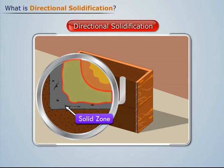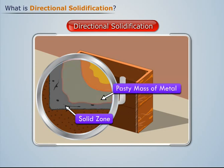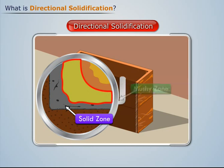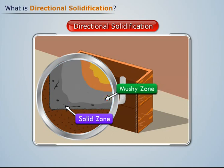Above the solid zone, there exists a pasty mass of metal which is half solid and half liquid in nature. The region where this pasty mass of metal exists is referred to as the mushy zone.